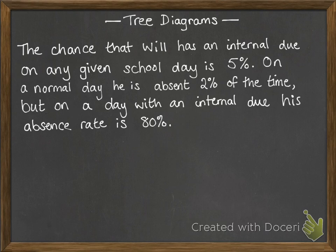We've got this example that the chance Will has an internal due on any given school day is 5%. On normal days he's absent 2% of the time, but on a day with an internal due his absence rate is 80%.